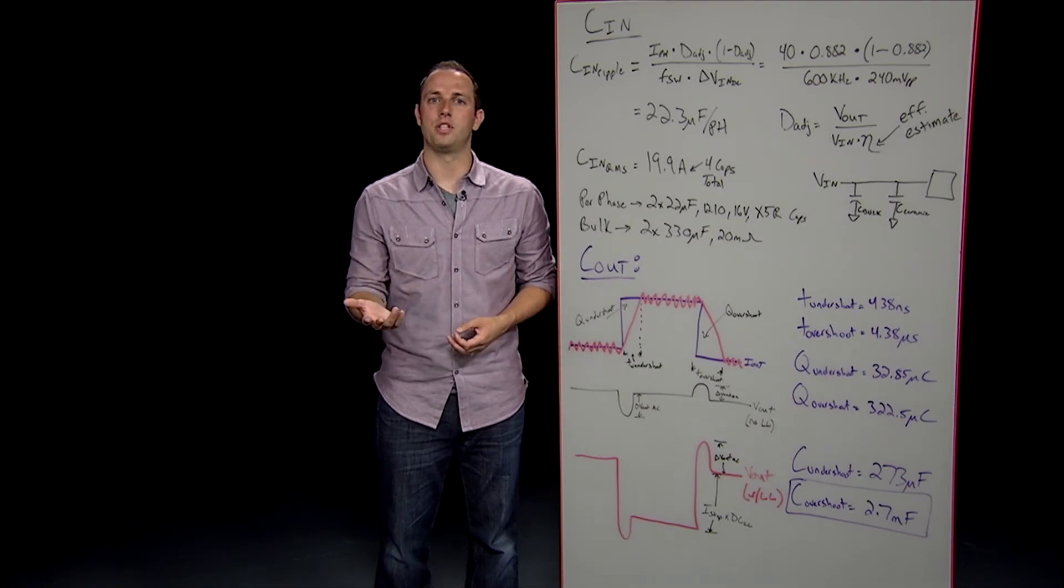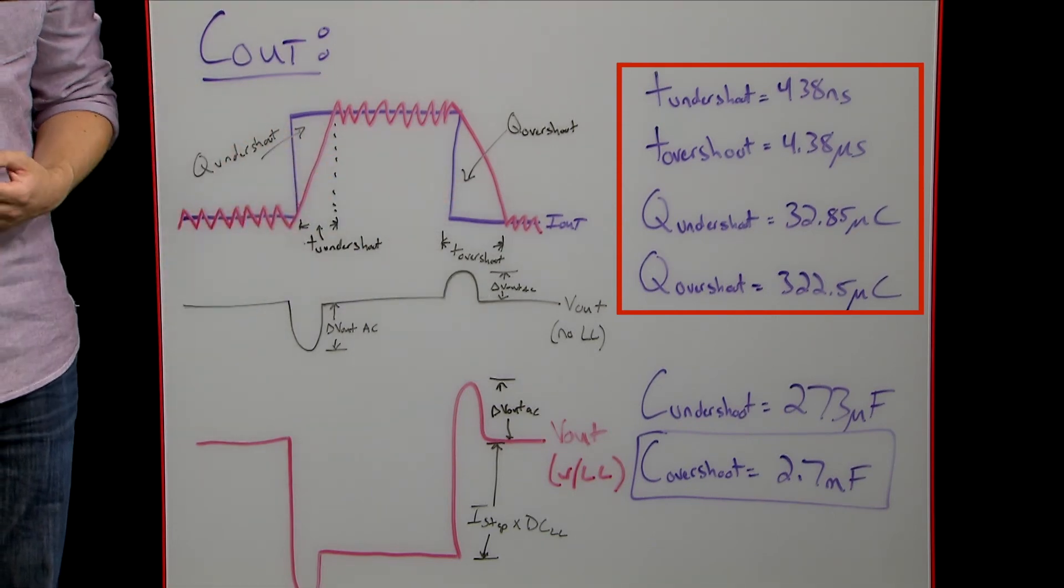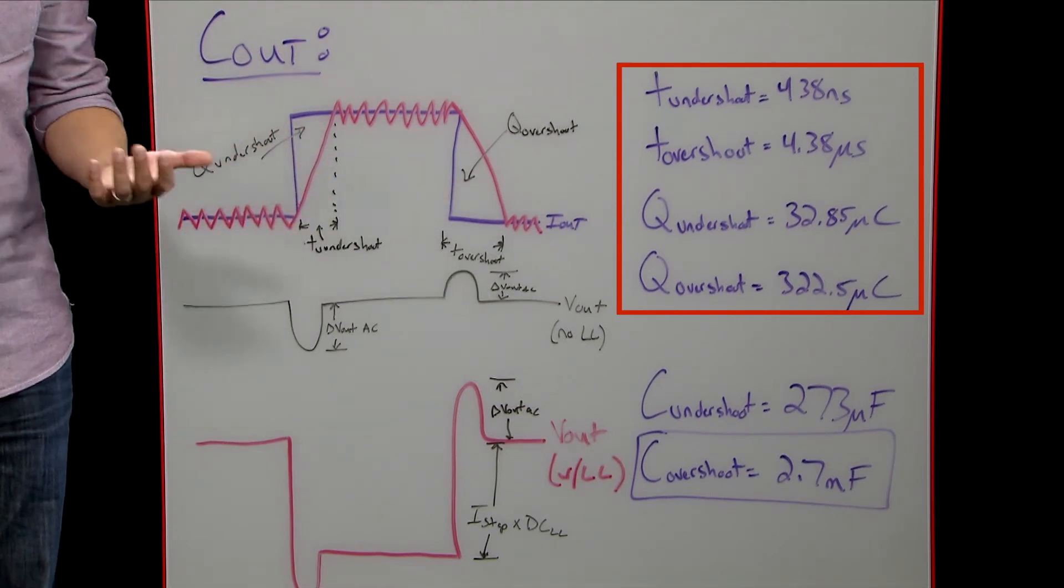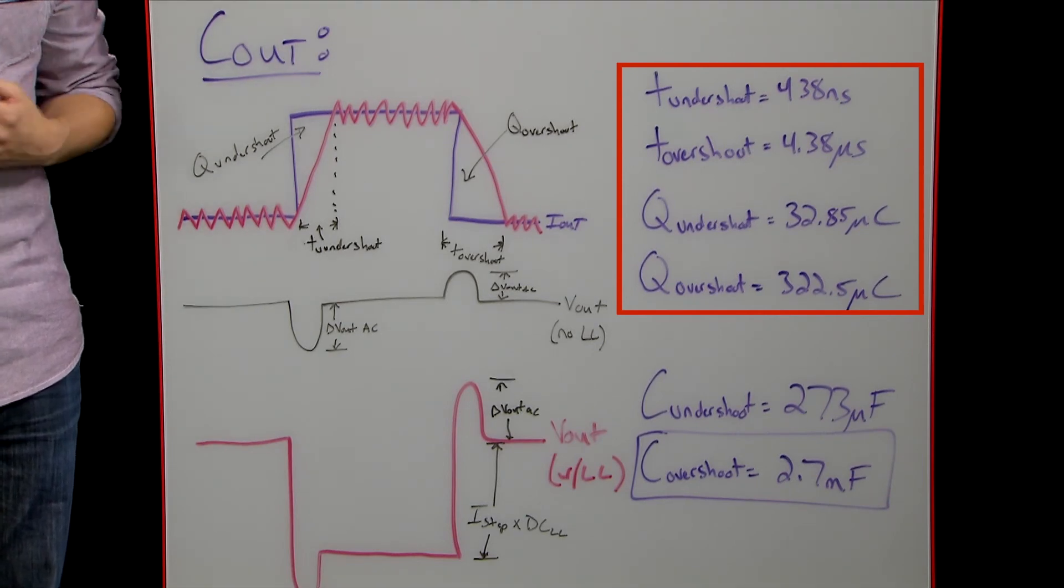Using the equations in the app note, we get the following values for over and undershoot charges. From these numbers, it's just a matter of dividing the charge calculated by the allowable voltage swing on Vout to get the values you need of capacitance to hit the transient specs.